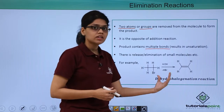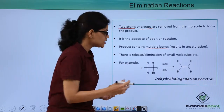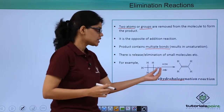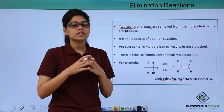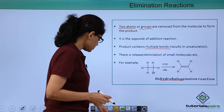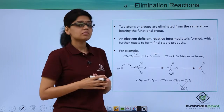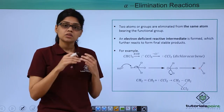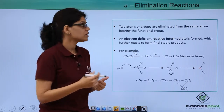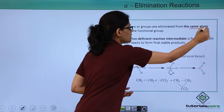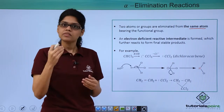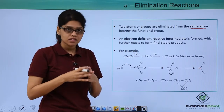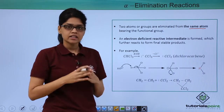This reaction is also called a dehydrohalogenation reaction because a hydrohalogen group — HBr — is essentially being eliminated. Let us now discuss the different types of elimination reactions. The first type is called alpha elimination reaction, where the two atoms or groups getting eliminated are from the alpha carbon, that is the carbon bearing the functional group, and an electron-deficient reactive species is consequently generated.